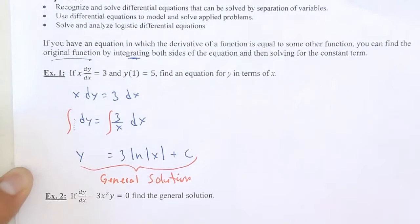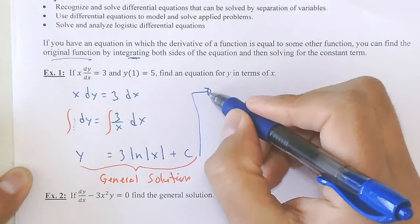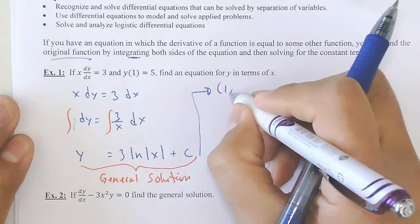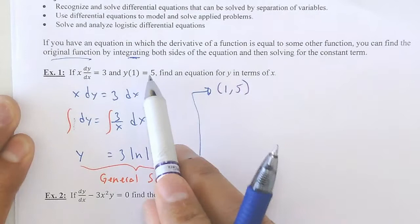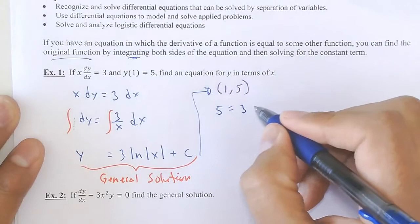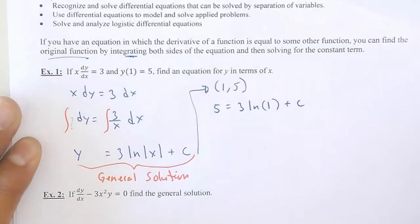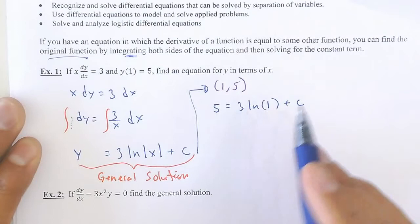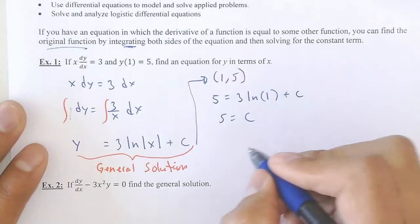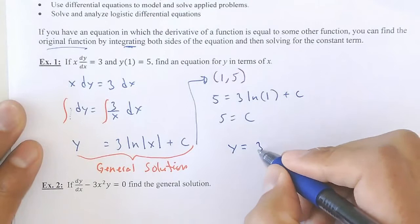I am given a point. The ordered pair given was (1, 5) — when x is 1, y is 5. That will allow me to find the constant: 5 equals 3 times the natural log of 1. Natural log of 1 is 0, so 0 times 3 is 0, giving me 5 as my constant. That means the exact solution — the particular function — is y = 3 ln|x| + 5.